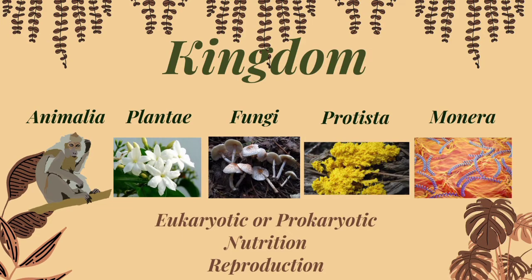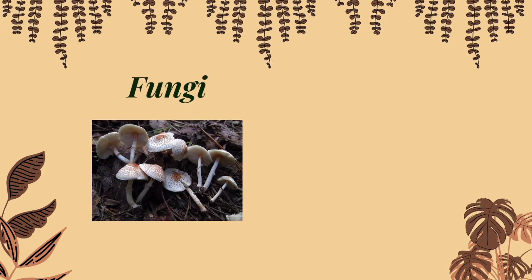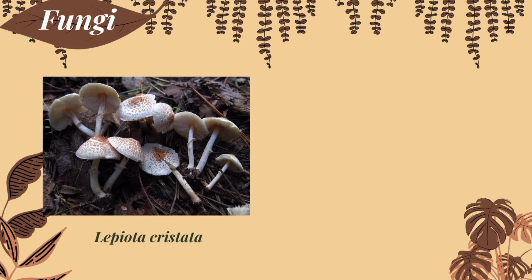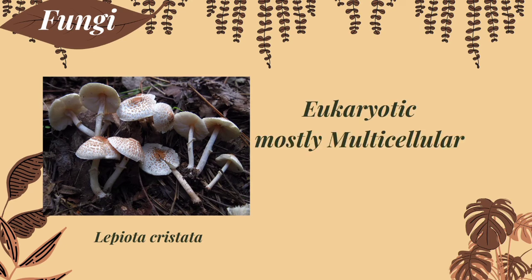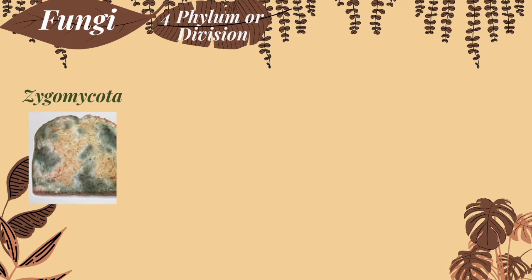Now the third kingdom: the fungi kingdom. Fungi was first placed under kingdom Plantae because it is eukaryotic and multicellular — for example, a mushroom. But there are fungi that are unicellular, like yeast. Also, they are heterotrophic, meaning they eat other organisms. Many fungi are decomposers, which can be seen in fruits and vegetables. Fungi is classified into four divisions based on sexual reproduction and lichens.